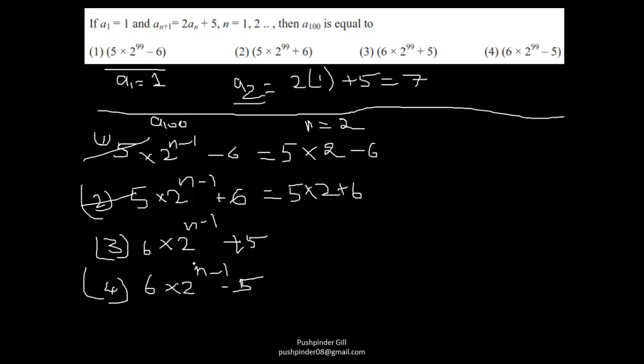Similarly, 6 into 2, that is 12, 12 plus 5, it's again 17, gone. And with this option, this has to be the answer. Even if you want to check it, that is 6 into 2 to the power 1 minus 5, that gives us 7. So this is our right answer.